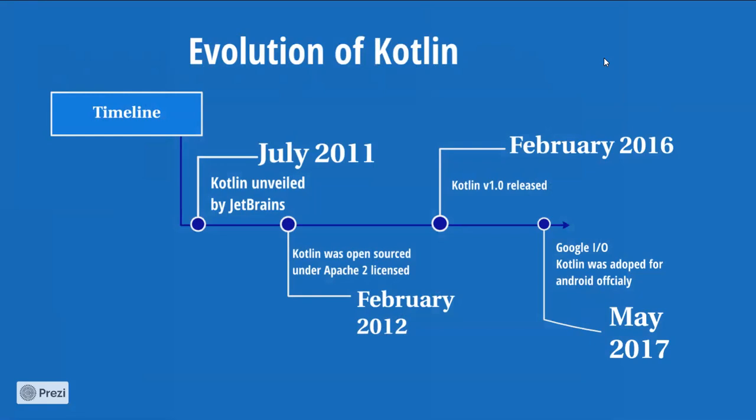This is a timeline for Kotlin's evolution. In 2011, Kotlin was unveiled by JetBrains. Until February 2012, Kotlin was open-sourced under the Apache license. Then in February 2016, the main stable version was released.